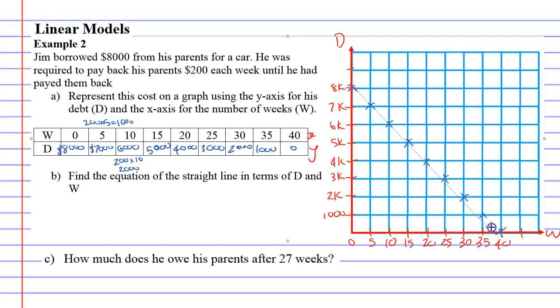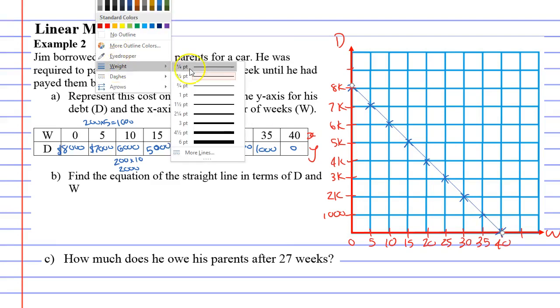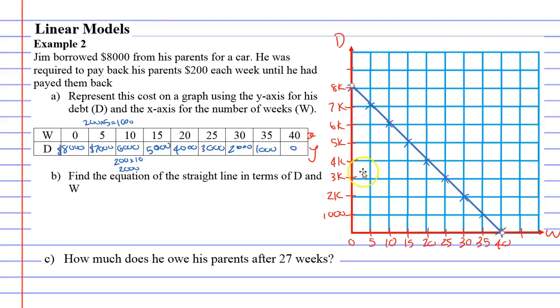Alright. So we'll put our nice straight line over those x's. Make it a little thicker. And this time something a little different. I'm actually not going to put an arrow on it. And the reason I'm not is because once you get to 40 weeks it's not going to keep going. So there's no need to put the arrow there. Alright. Now that graph is done now.